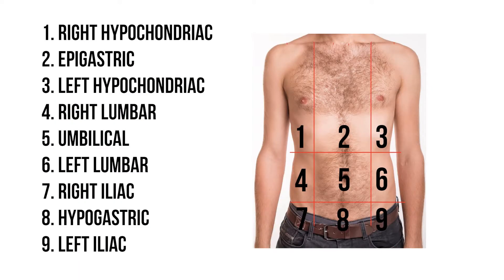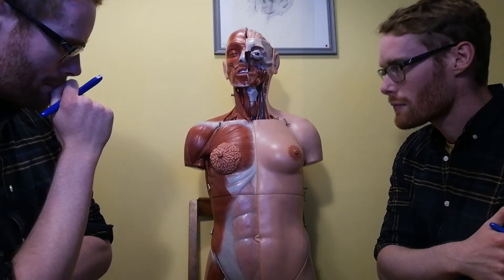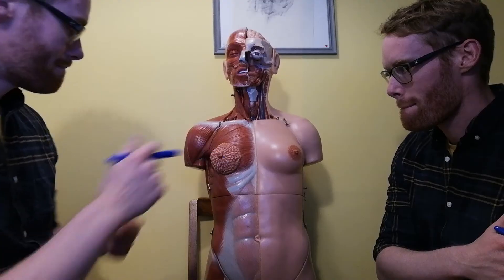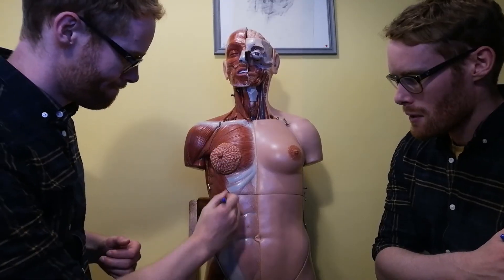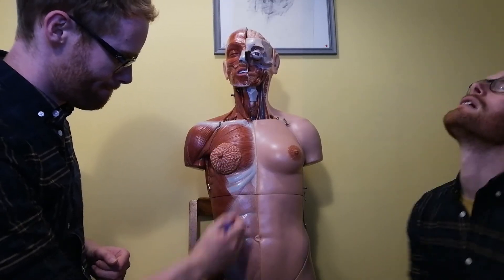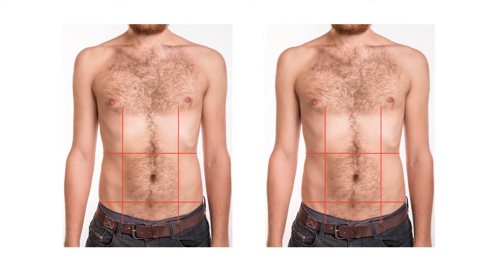So those are our nine abdominal regions, and there are a lot of ways you could revise these, but personally I'd recommend playing some games of abdominal tic-tac-toe. Once you've learnt these regions you can then use them to identify the positions of the major organs.